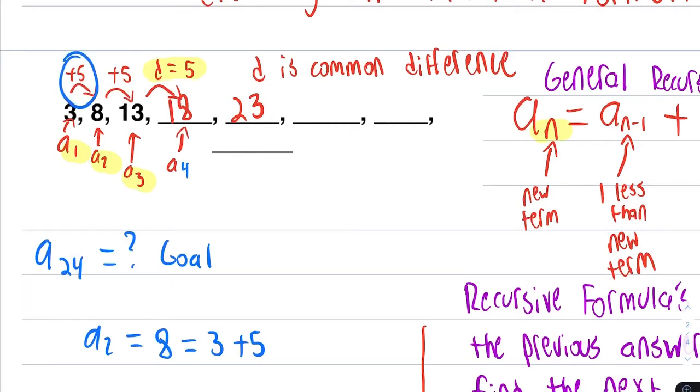To get A3, we would have needed to add 5 twice. To get the next one, A4, then we would have needed to add 5 three times. To get A5, how many times do you think we would need to add 5?